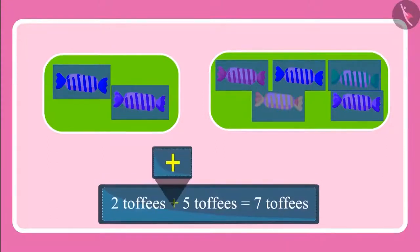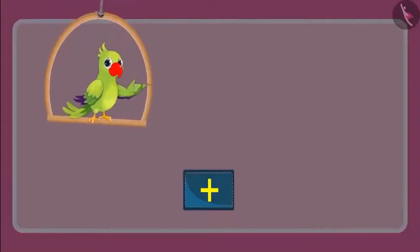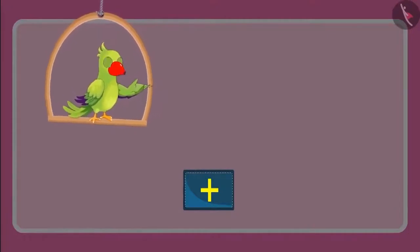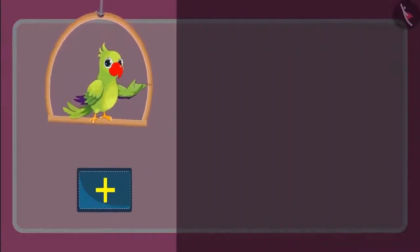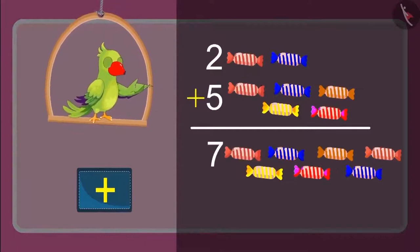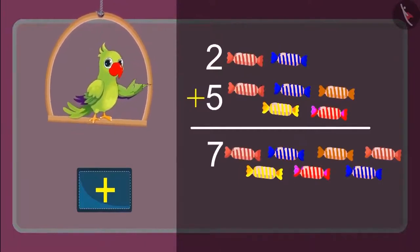Children, do you know what symbol this is? Yes, this is the symbol of addition. We can write it in another way too. This means when we added five toffees to two toffees, we got seven toffees. You also got the same answer, right? Excellent!